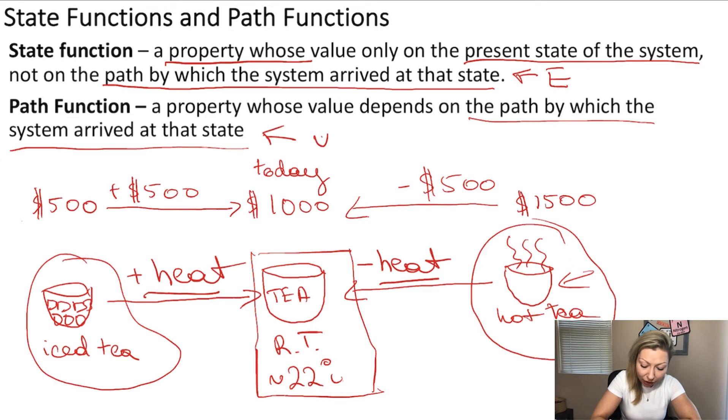But work and heat are path functions. So, it does not depend how you got to that state. The energy is always going to be the same. But depending on which path you took, the work and the heat might be different.